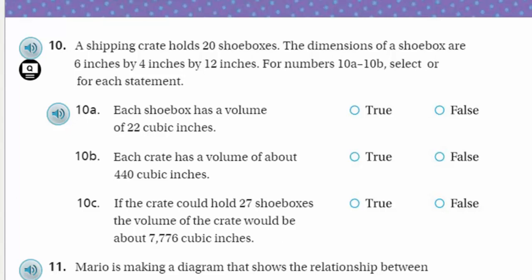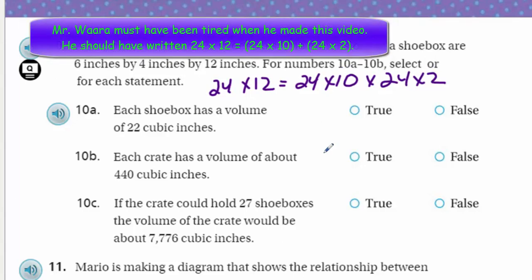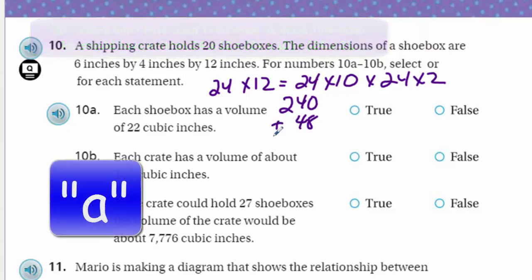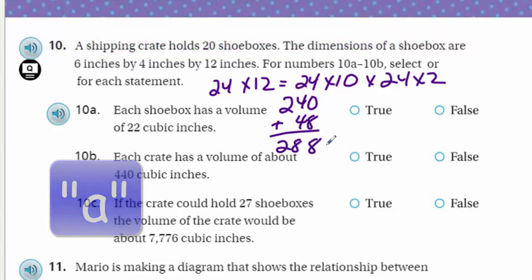10A says each shoe box has a volume of 22 cubic inches. I don't know if I would go with that one there - that number sounds way off. Let's see, because we have basically 6 times 4, that's 24 times 12. 24 times 12 - that's using the distributive property - is 24 times 10 plus 24 times 2. I like that because that's 48 and that's 240. So 240 plus the 48 is 288 inches cubed, since we're doing volume here. Yeah, that's not really even close. 22 cubic inches? Oh my goodness. I think you're a little bit off there. I'm going with false.